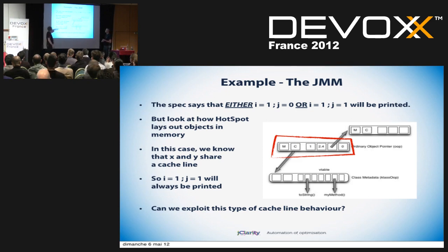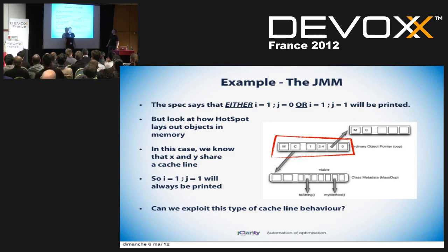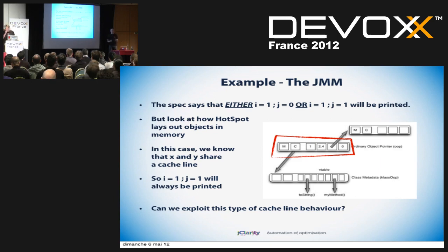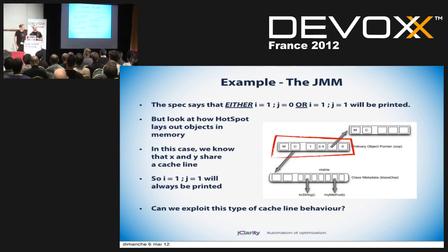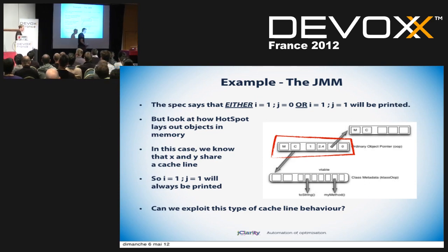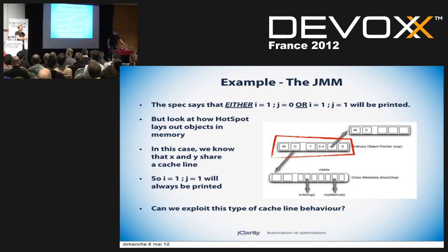Here's an ordinary object pointer — this is how an object is laid out in memory inside Hotspot. Two words here that we don't need to worry about, and here are where the fields come, laid out directly next to each other in memory. The hardware guarantees that this will share a cache line — for now. On every JVM you can get your hands on, this behavior will always show you one and one. But you could write a JVM that violated this rule, because it's not a rule — it's just an implementation detail.